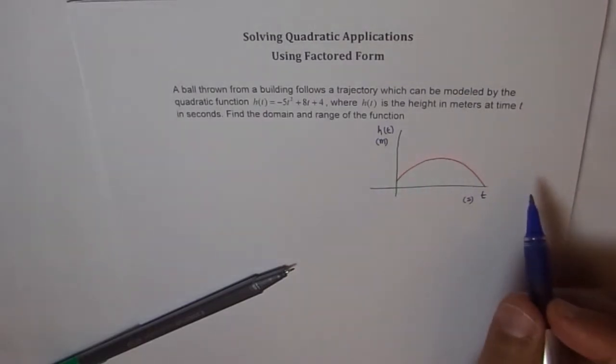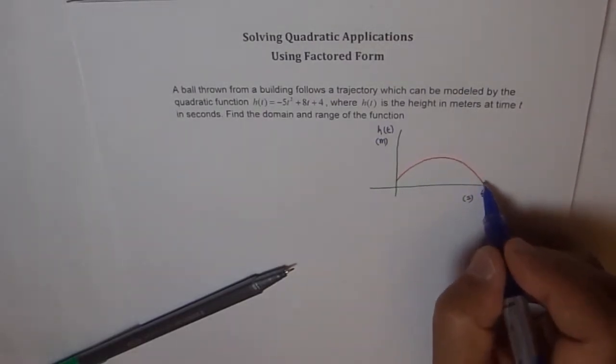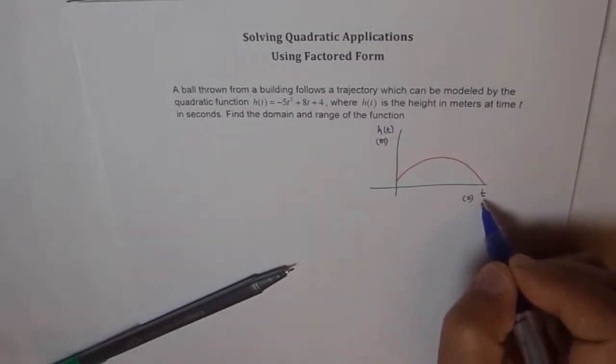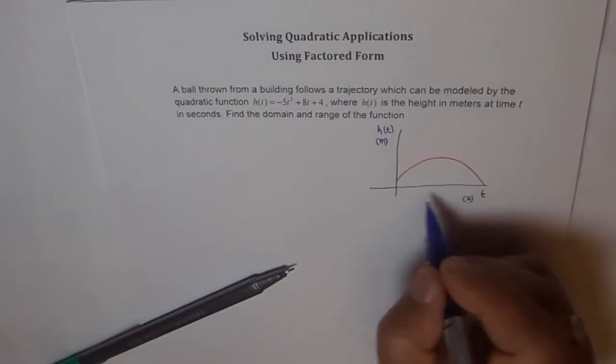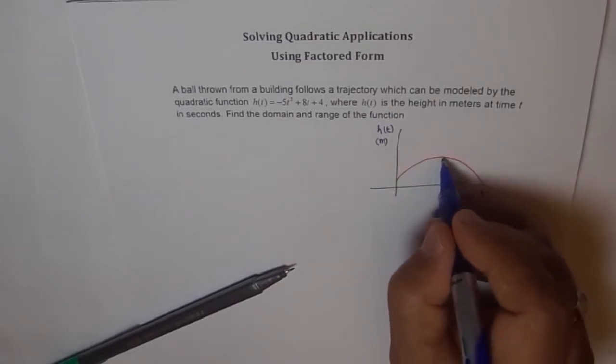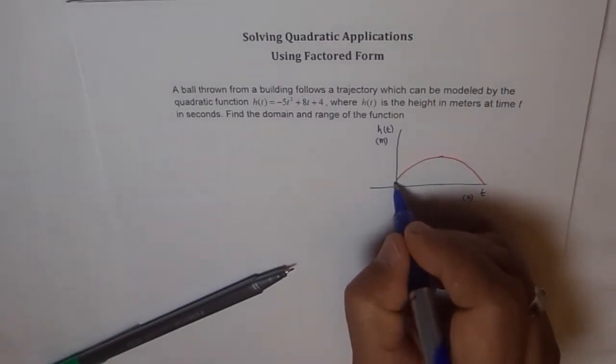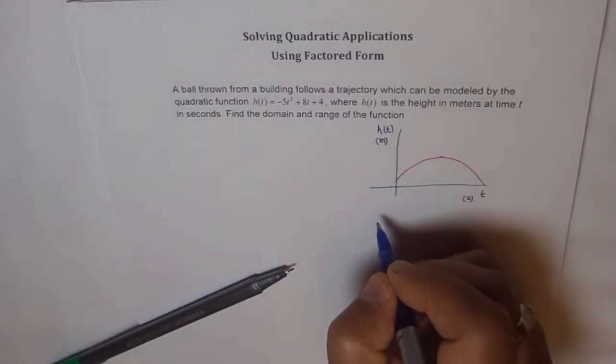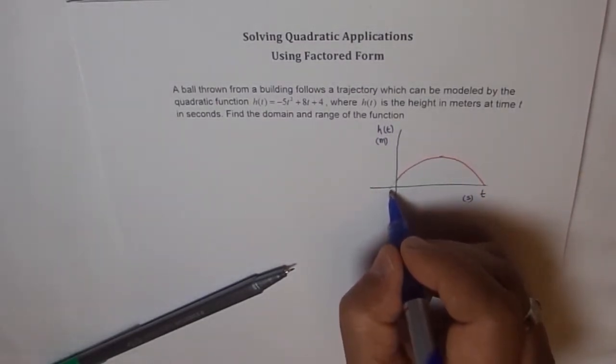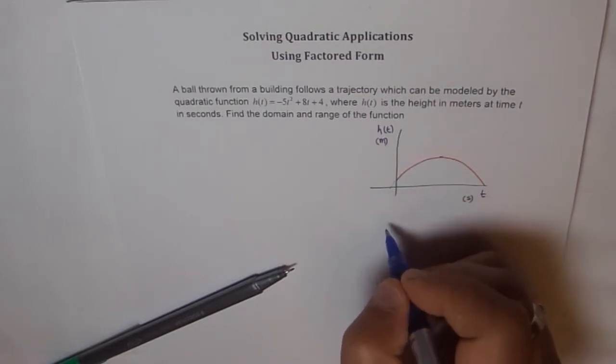To find domain and range, we need to find the time when the ball will strike the ground. It starts from 0, of course. At this point, height is 0. So that gives us the domain. Somewhere here we can assume it would have cut the x-axis, so we will have these two as our x-intercepts.